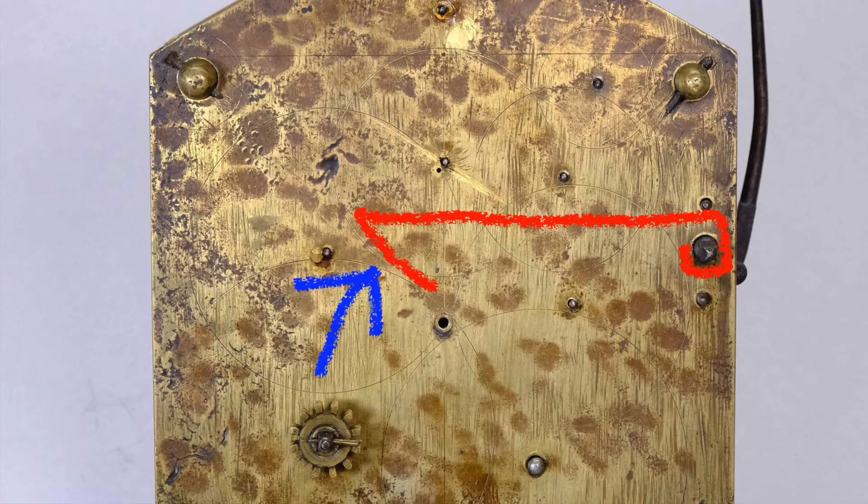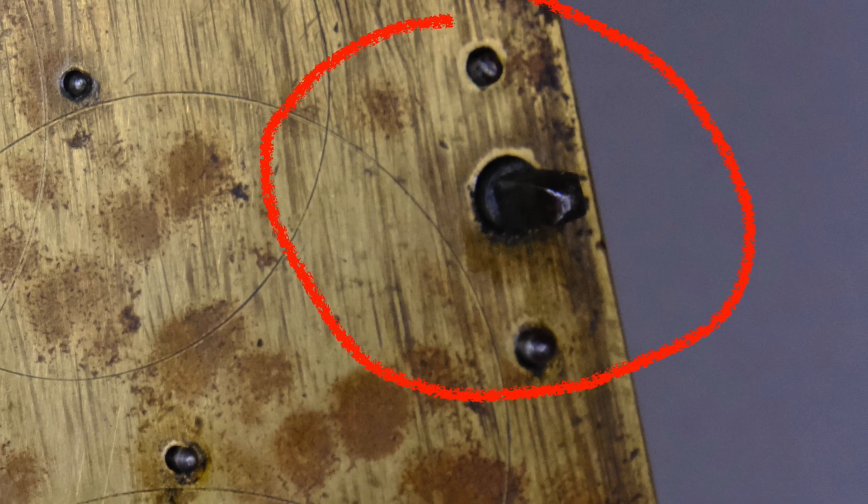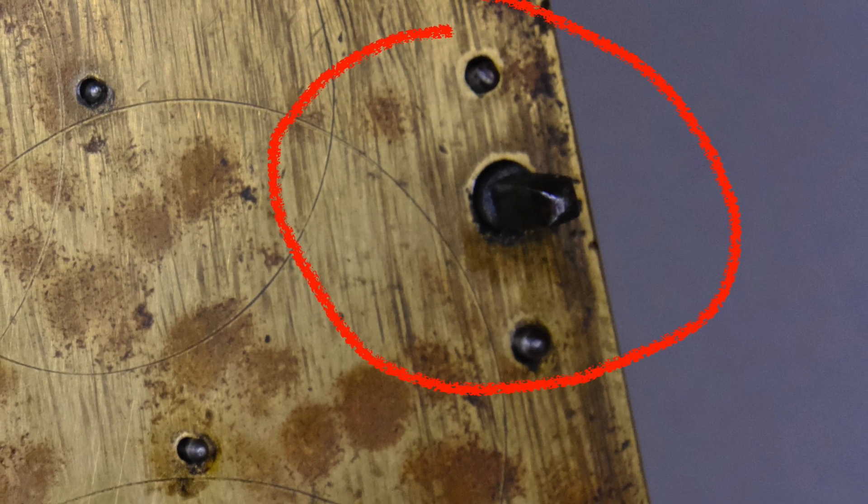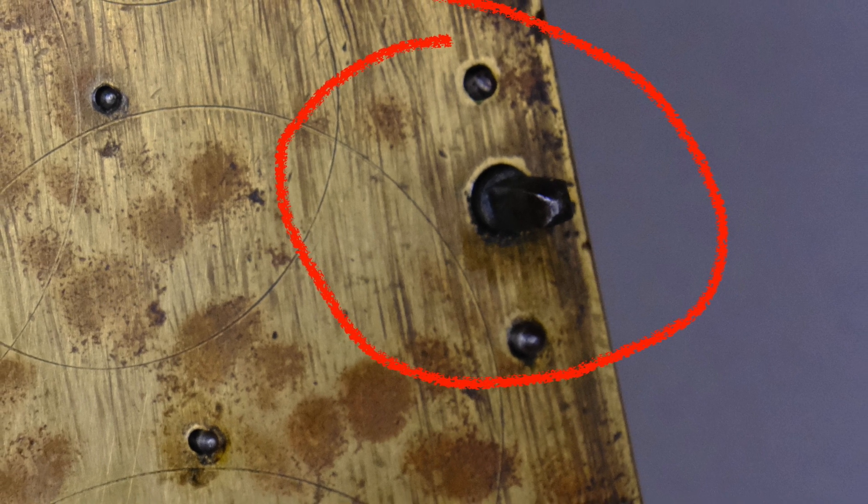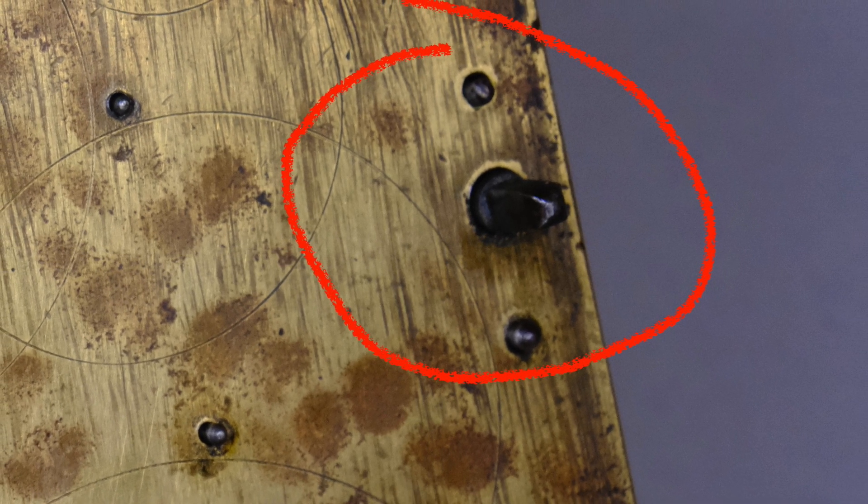We know that the lifting piece has to connect the cam that we've just seen and the arbor that protrudes through the front plate on the right here.